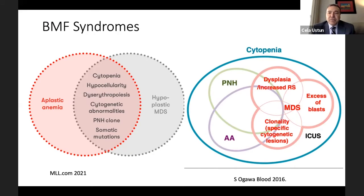Bone marrow failure syndromes are complex and overlap each other. Three major ones: myelodysplastic syndrome, which mainly occurs in older populations; aplastic anemia, another bone marrow failure disease that mainly occurs in younger groups. These two bone marrow failure syndromes overlap with other disorders, particularly paroxysmal nocturnal hemoglobinuria, and each disease can progress to and overlap with the others.